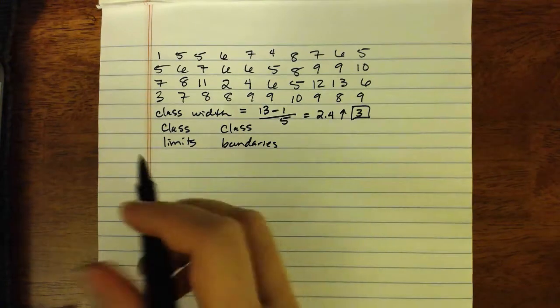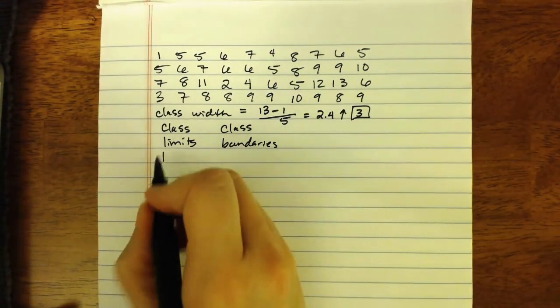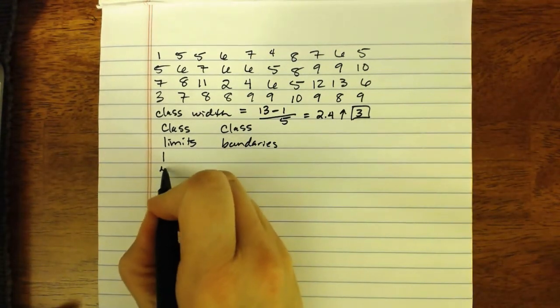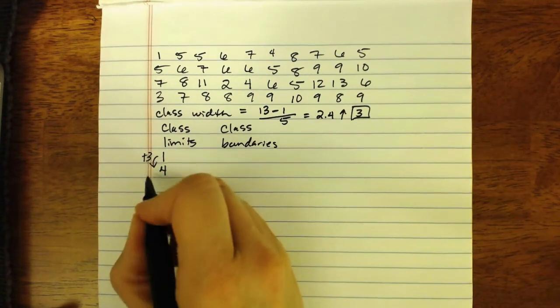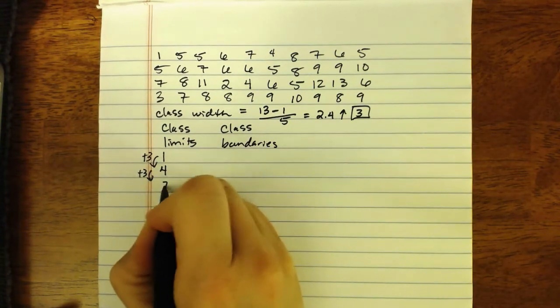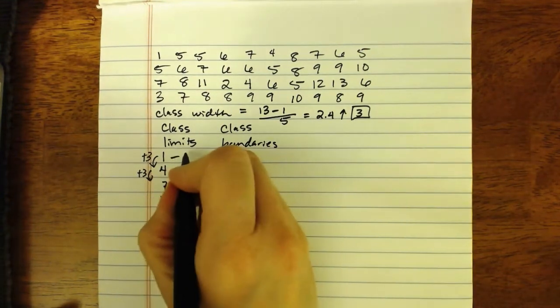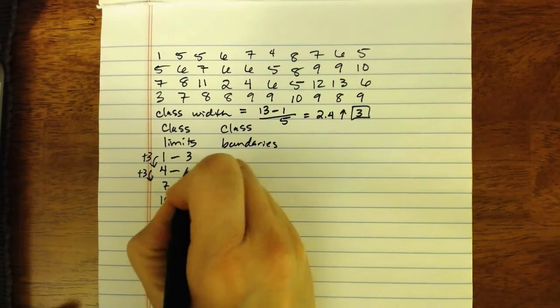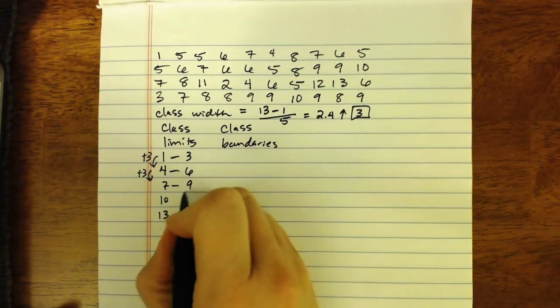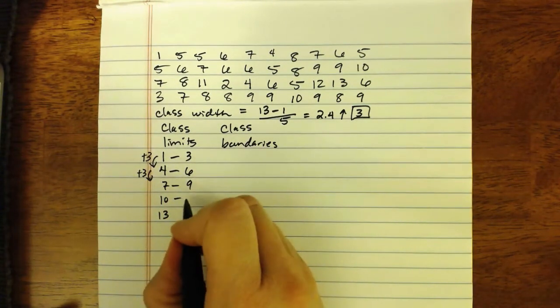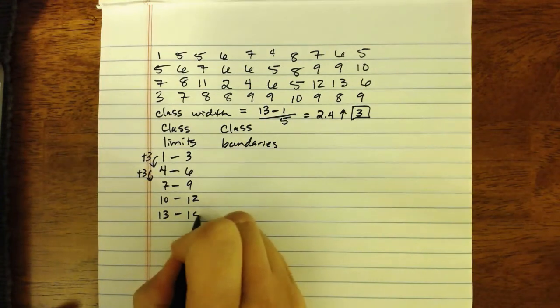So then with our class limits, we start at the lowest data point of 1. Next class we'll start at 4 because we're adding on 3 there. Add on 3 again, 7, then 10, and 13, which means that this first class goes from 1 to 3, 4 to 6, 7 to 9, 10 to 12, 13 to 15.